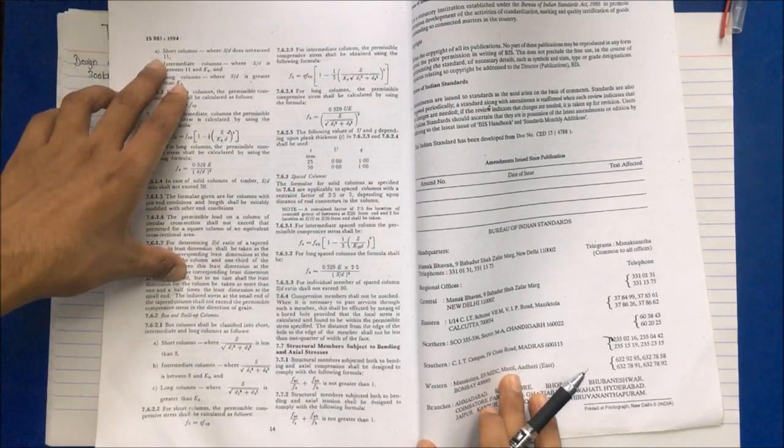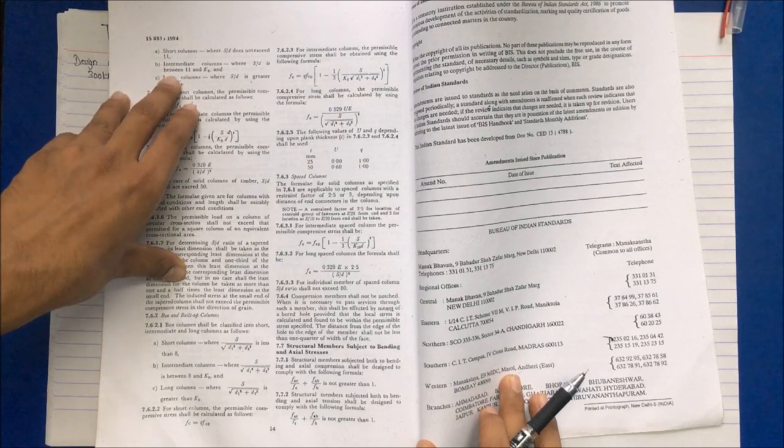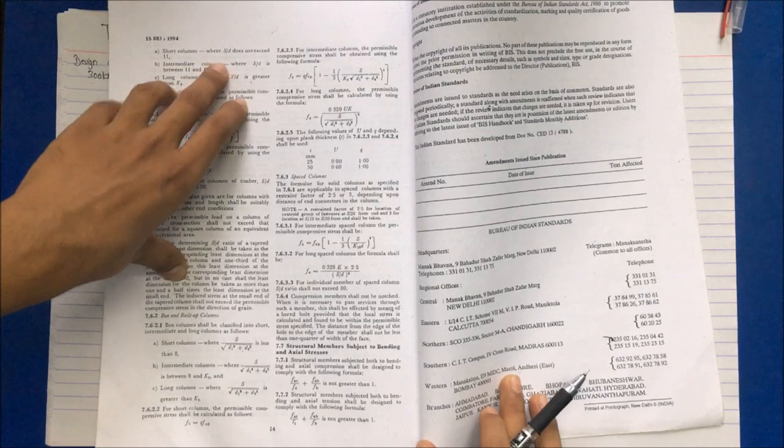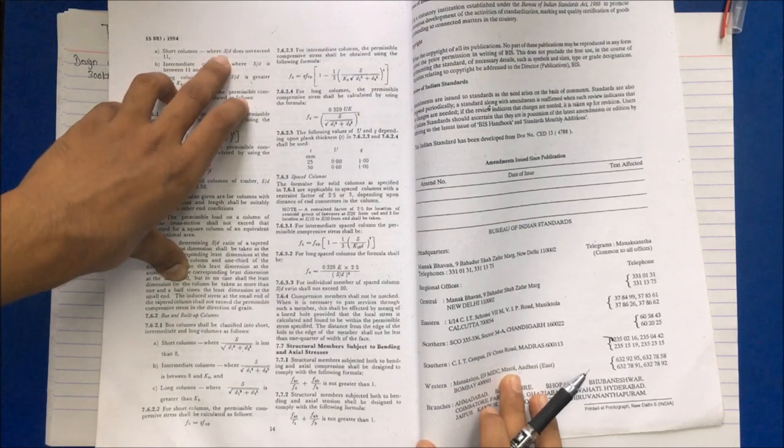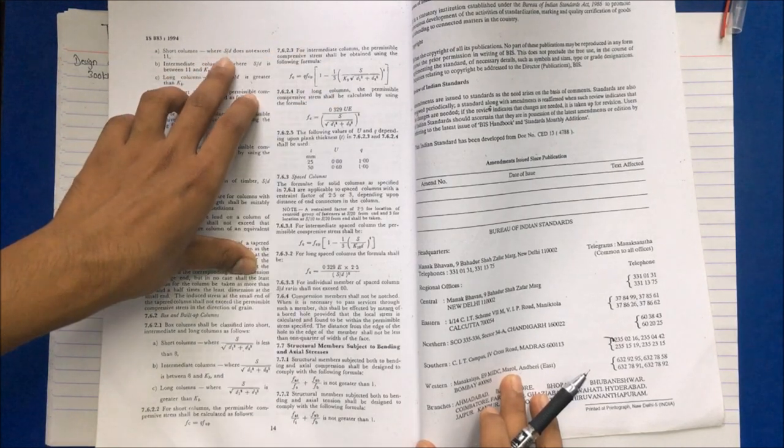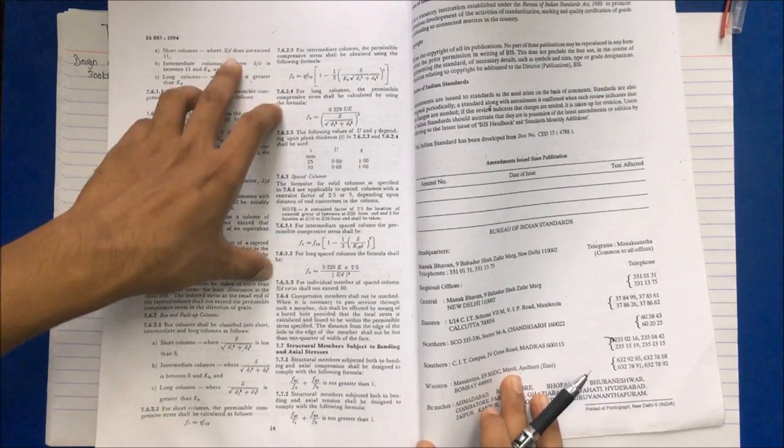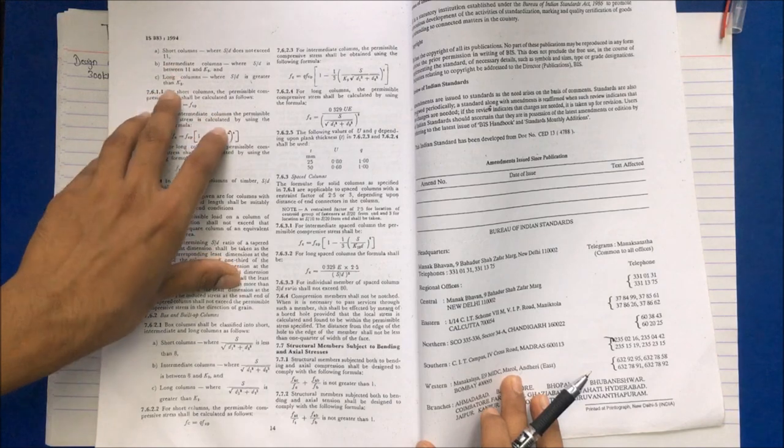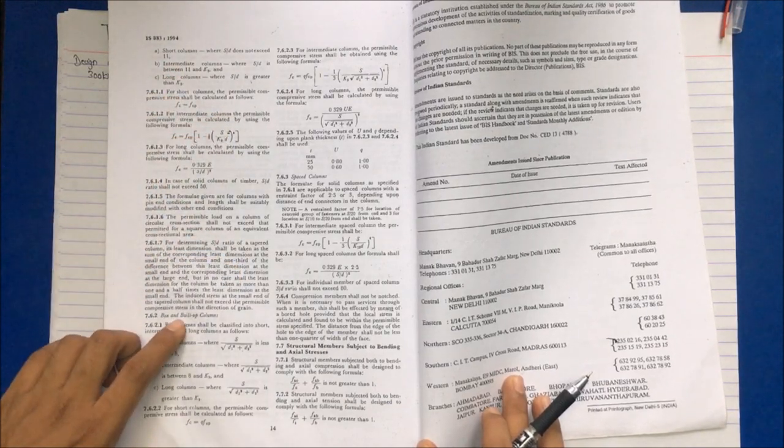The condition for short and intermediate column is given as s by d should not exceed 11. Here s by d - s is the span of the column and d is the depth. This value determines whether the column is short, intermediate, or long.